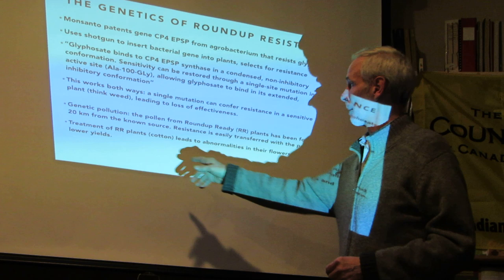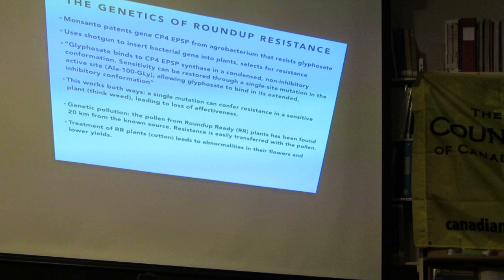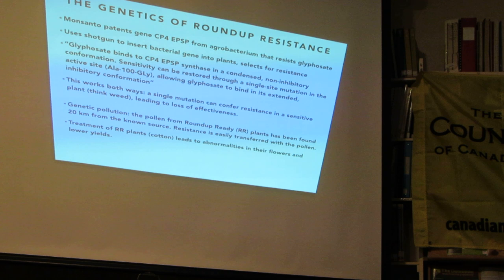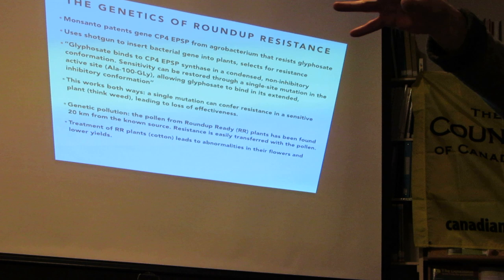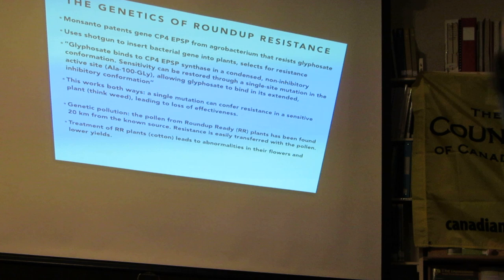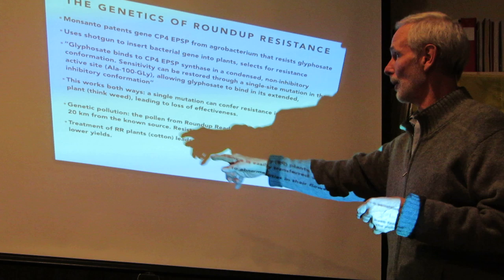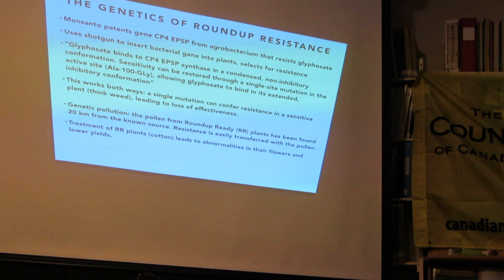One interesting finding I came across: in cotton, which is a self-fertilizing plant with both male and female parts, when you have a Roundup Ready cotton and treat it with glyphosate, the stamen grows longer and can't reach the pistil to fertilize it. The pollen can't get back and you get really lousy yields. So it's not all pretty even for the plant people — treating cotton with glyphosate to kill weeds also reduces cotton yields.